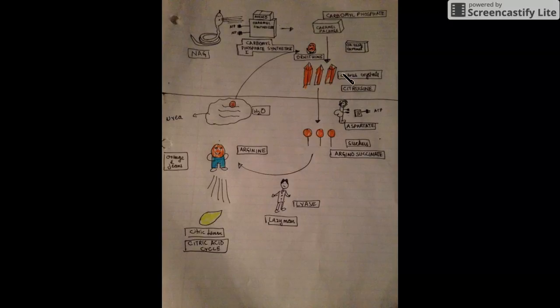And then this citrulline leaves the mitochondria. In the presence of aspartate, which gives the second nitrogen to the urea formation, and ATP, it forms argininosuccinate, suckers. And then in the presence of this lazy man lyase, these argininosuccinate are converted into arginine. And as a result it releases fumarate which goes into the citric acid cycle. Then this arginine along with water is again converted to ornithine which goes into the mitochondria.